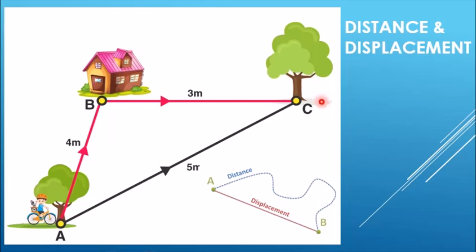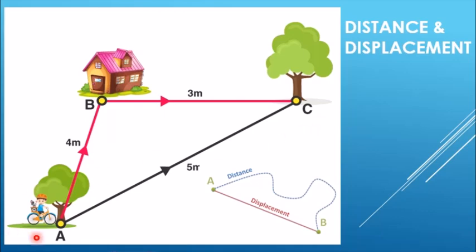So what will be the distance? Distance is the length of the route actually covered. The boy is going from A to B — this will be 4 kilometers. Then from B to C — this is also 3 kilometers. That means the distance covered is 4 plus 3, that is 7 kilometers. But here if you see the distance from A to C directly, this is only 5 meters. So this distance is less — this is 7 meters and this is only 5 meters. So this is the distance.